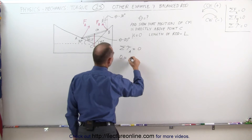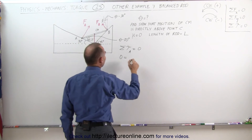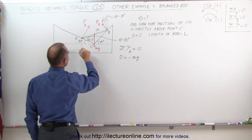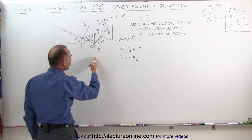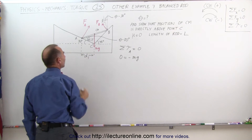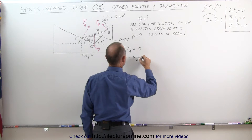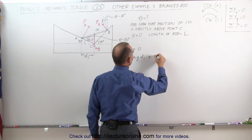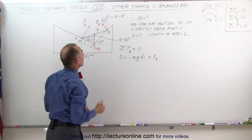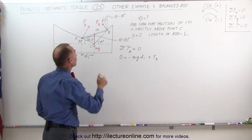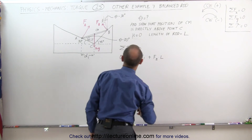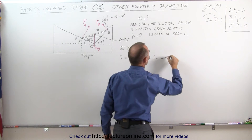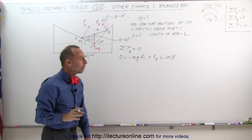We take Mg — since that gives a clockwise torque, that's a negative torque — minus Mg times D1, the distance from the line of action to the pivot point. Then we have a second force, F sub B, which gives a counterclockwise (positive) torque, multiplied by the length of the rod times the cosine of phi, the angle between the force and the perpendicular to the rod.